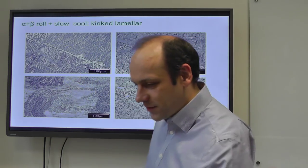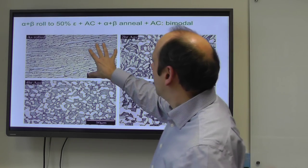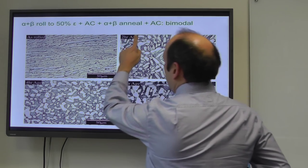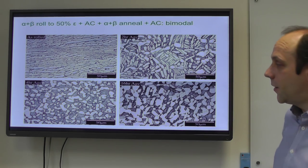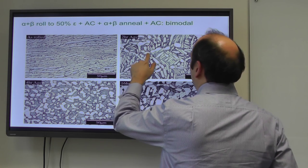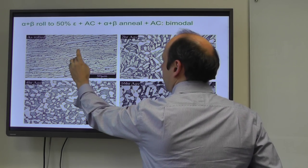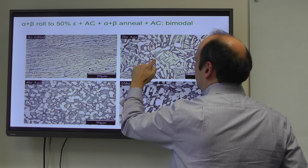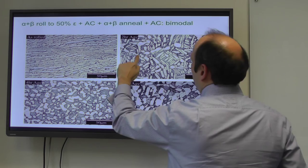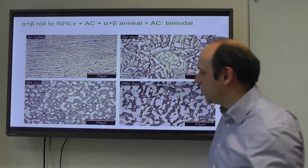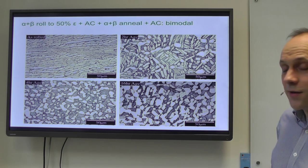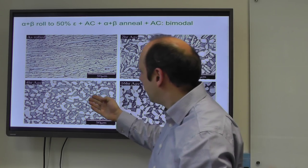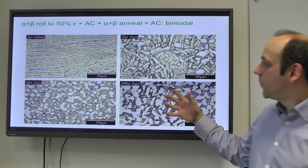Taking the 50%-deformed structure and annealing it with an air cool - annealing for 2, 4, and 16 hours at 950°C, where we're at about 50% primary alpha - the plates break up and dissolve back partially on heating to 950°C, becoming an alpha-beta structure, and then recrystallize to form lots of primary alpha grains. With more time for recrystallization they form a more random structure where you can no longer see the old plates, and this becomes more complete with longer times. On cooling, alpha plates form in between.